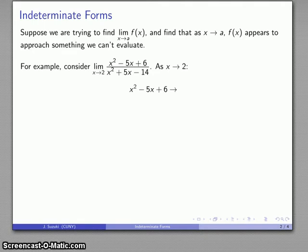As x gets close to 2, our numerator looks like it's getting close to 2 squared minus 5 times 2 plus 6, that's 4 minus 10 plus 6, that's 0. And our denominator, x squared plus 5x minus 14, also looks like it's going to 2 squared plus 5 times 2 minus 14, and after the dust settles, it looks like that's going to 0 as well.